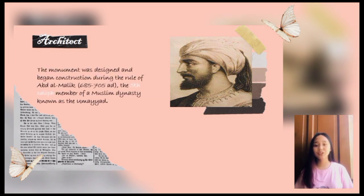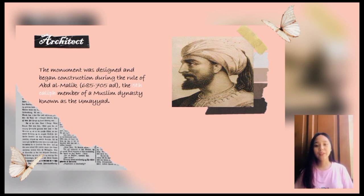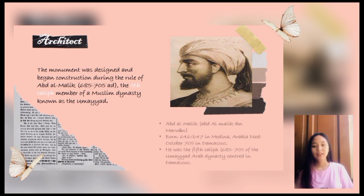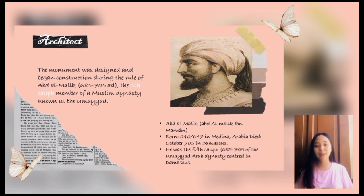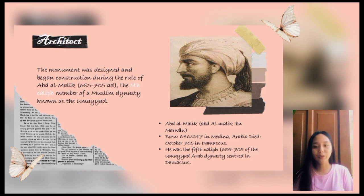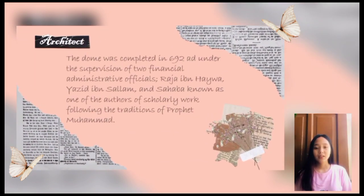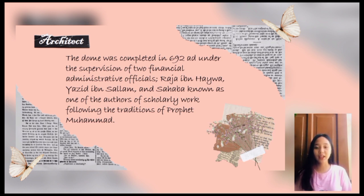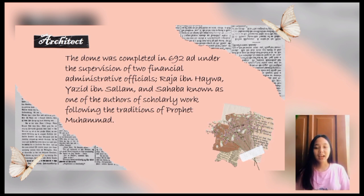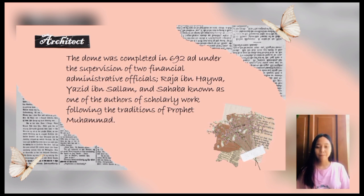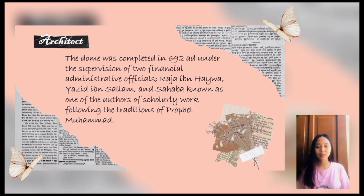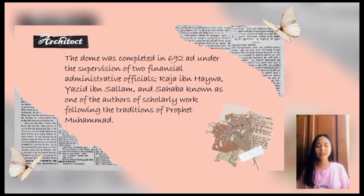The monument was designed and construction began during the rule of Abd al-Malik, the fifth caliph and member of the Muslim dynasty known as the Umayyad. He was born in 646 in Medina and died in October of 705 in Damascus. The Dome was completed in 692 under the supervision of Raja Haywa, Yazid Salam, and Sahaba — known as authors of scholarly work following the traditions of Prophet Muhammad. To clarify, Abd al-Malik is the one who ordered the Dome of the Rock to be built, while Raja Haywa, Yazid Salam, and Sahaba were the ones who managed the building.